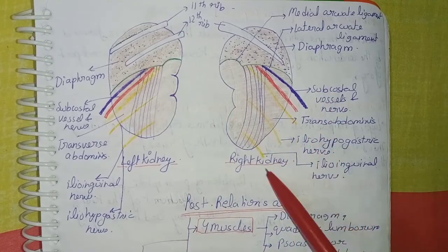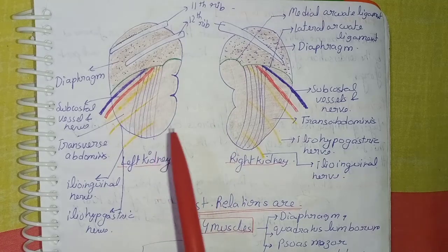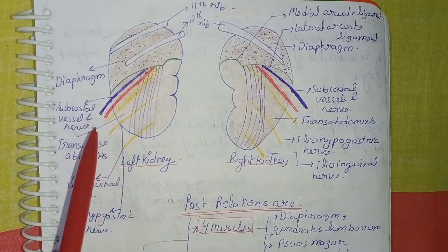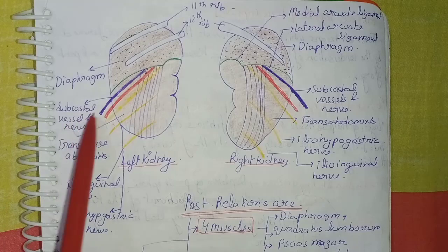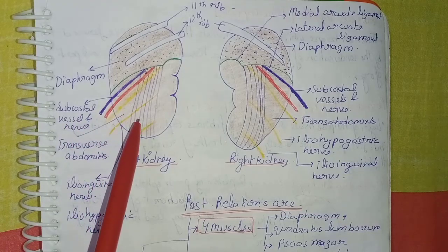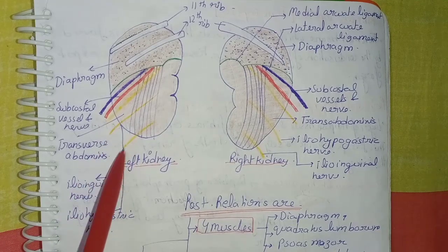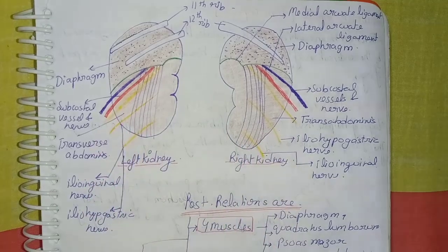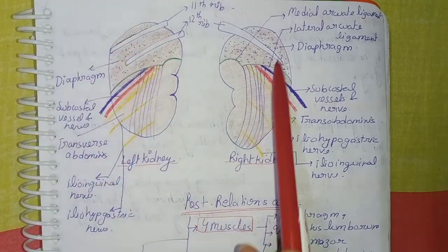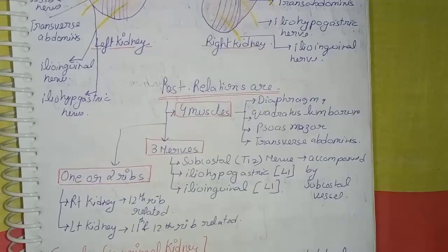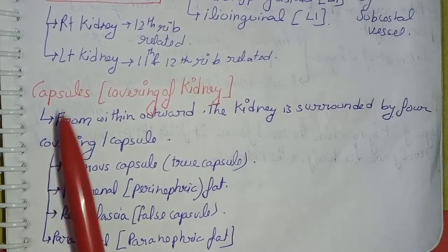The posterior relations common to both kidneys are four muscles: diaphragm, quadratus lumborum, psoas major, and transversus abdominis. There are also three nerves common to both kidneys: subcostal (thoracic 12) nerve, iliohypogastric nerve (L1), and ilioinguinal nerve. So in the left kidney, the 11th and 12th ribs are related; in the right kidney, only the 12th rib is related.